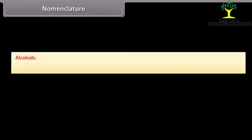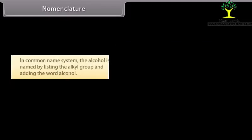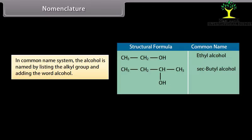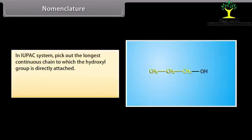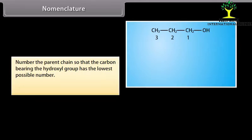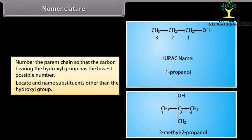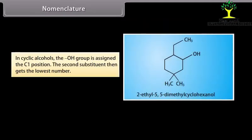Nomenclature of alcohols. Alcohols can be named either by using the common name system or by the IUPAC system. In the common name system, alcohol is named by listing the alkyl group and adding the word alcohol. In the IUPAC system, pick out the longest continuous chain to which the hydroxyl group is directly attached. Drop the -e ending and add -ol. Number the chain so that the carbon bearing the hydroxyl group has the lowest possible number. For example: 2-methyl-2-propanol. In cyclic alcohols, the hydroxyl group is assigned the C1 position; for example, 2-ethyl-5,5-dimethylcyclohexanol.